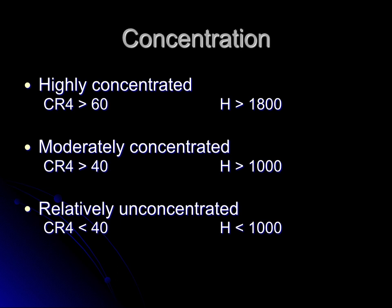A four-firm concentration ratio of 60 percent, our highest concentration threshold, would be equivalent to a Herfindahl Index of over 1,800. Moderately concentrated industries running 40 to 60 percent on the CR4 would fall between 1,000 and 1,800 on the Herfindahl Index scale. Relatively unconcentrated industries would have a four-firm concentration ratio below 40 percent, or a Herfindahl Index of less than 1,000.